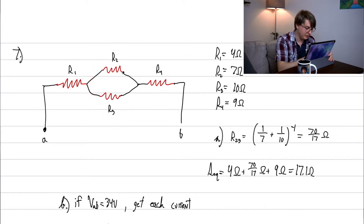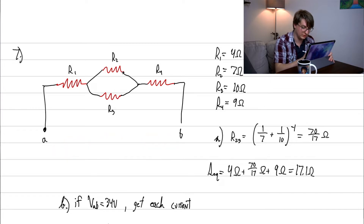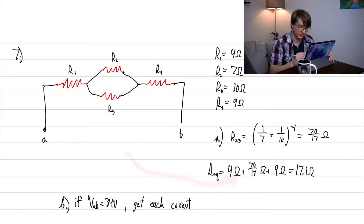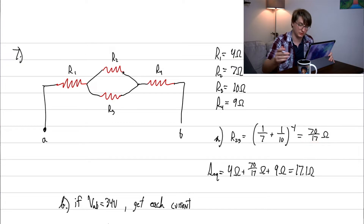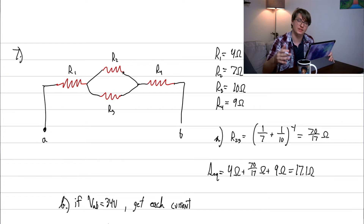After combining the parallel pair, we're left with a circuit that's just three resistors in series. We simply add them across: 4 plus 70/17 plus 4, giving us an equivalent resistance of about 17.1 ohms. We've combined everything down to one equivalent resistor.